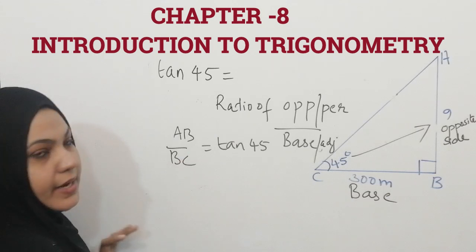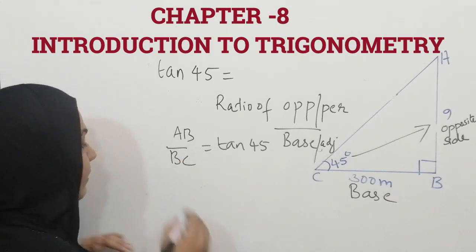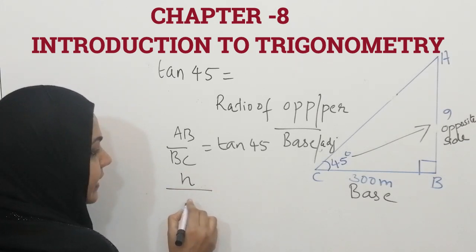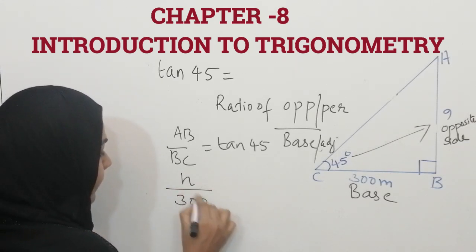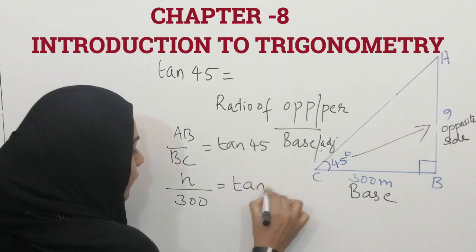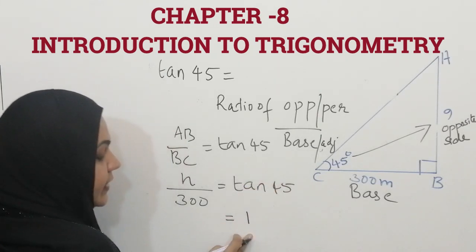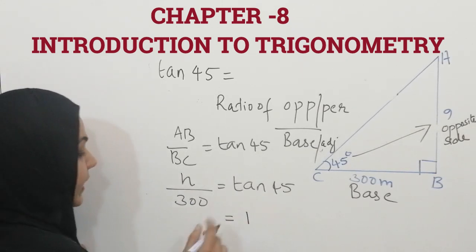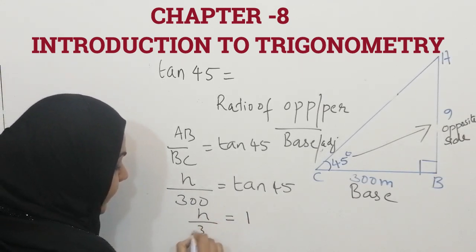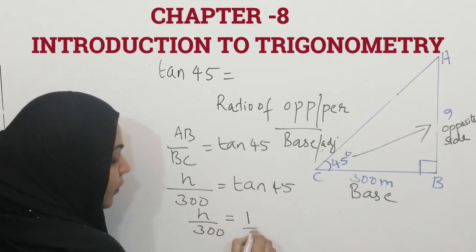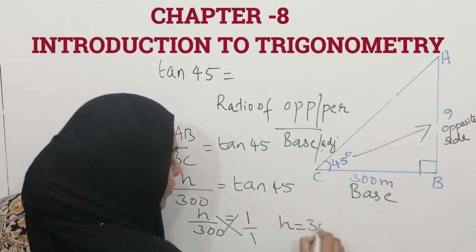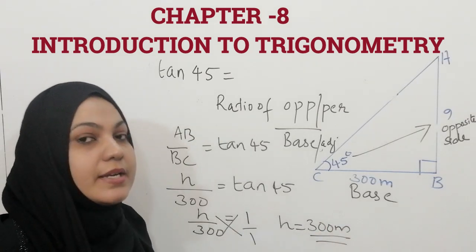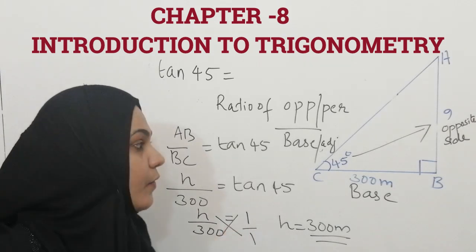AB is what we have to find, so I am calling it H — that is our height. BC is the base, which is 300 meters. So H divided by 300 equals tan 45. Tan 45 is 1. There are standard values for trigonometric ratios that we will learn in a coming session. When you do cross multiplication, you get H equals 300 meters. From this you can understand trigonometry is really easy to solve such types of questions.